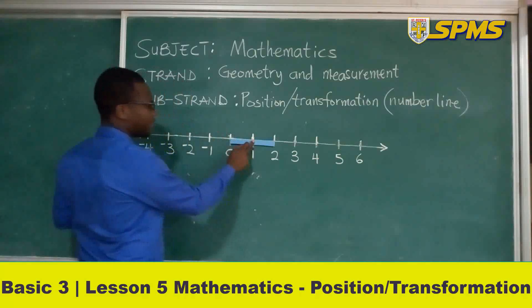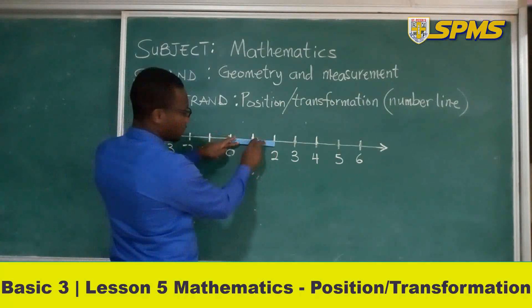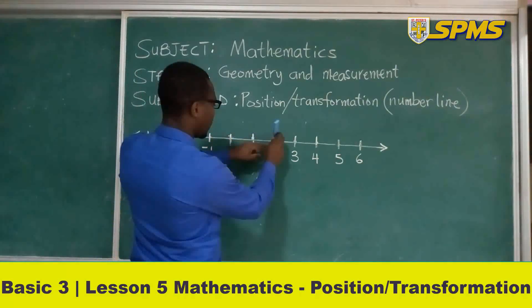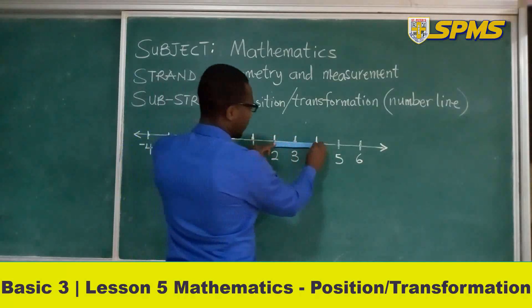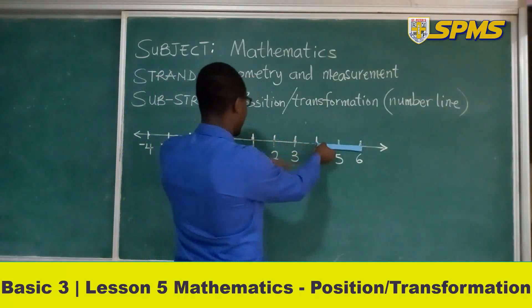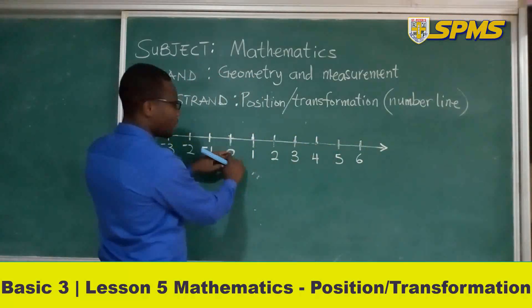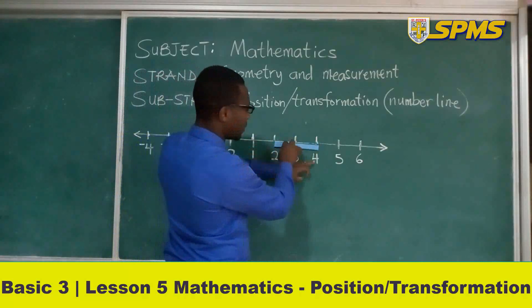So we can see that we can use this ruler to show the distance between 0 and 2. Then also between 2 and 4. And then 4 and 6. So the distance between 0 and 2 is the same as the distance between 2 and 4.